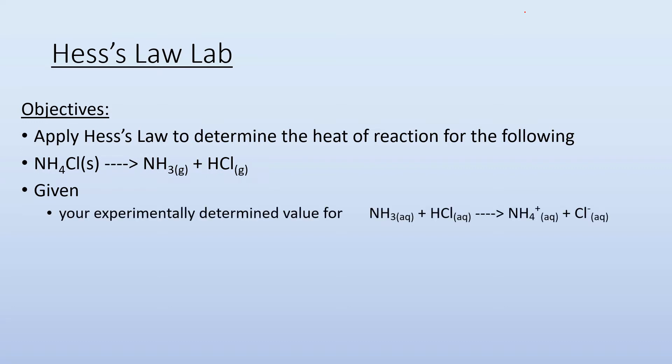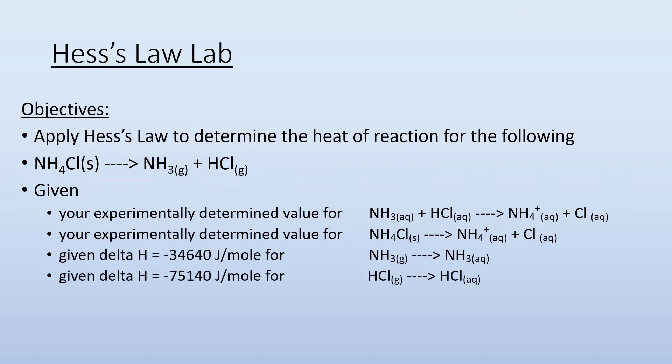We're going to have a few different steps. First we're going to experimentally determine the value for this reaction where we have aqueous ammonia reacting with aqueous hydrochloric acid to give us ammonium ion and chloride ion, as well as experimentally determine the value for ammonium chloride solid breaking apart into ammonium aqueous and the chloride ion aqueous. Basically dissolving ammonium chloride and then we have these two processes with given heat of reactions. Our goal is to figure out the heat of reaction for two of these steps, use the other two steps, combine them by applying Hess's Law and getting that overall reaction.